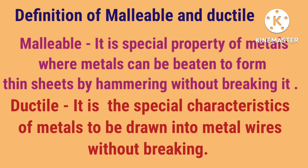Definition of malleable and ductile. Malleable: it is the special property of metals where metals can be beaten to form thin sheets by hammering without breaking, and this property is called malleability. Ductile: it is the special characteristic of metals to be drawn into metal wires without breaking, and this property is called ductility.